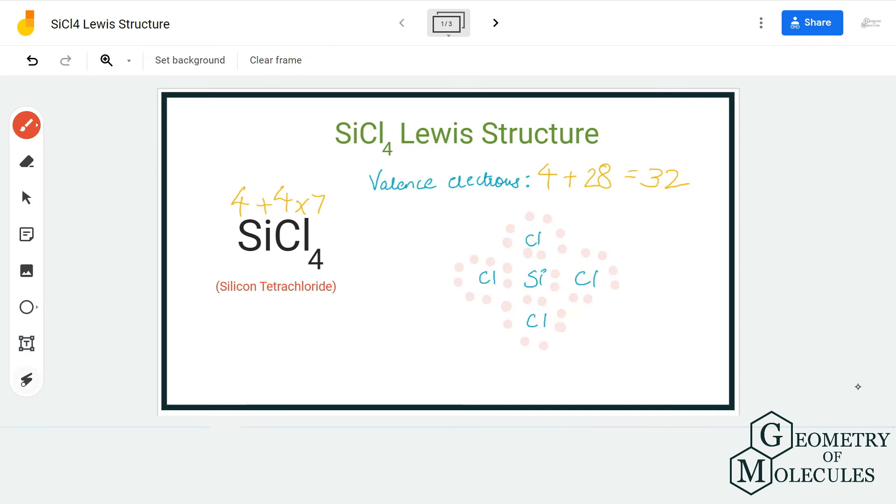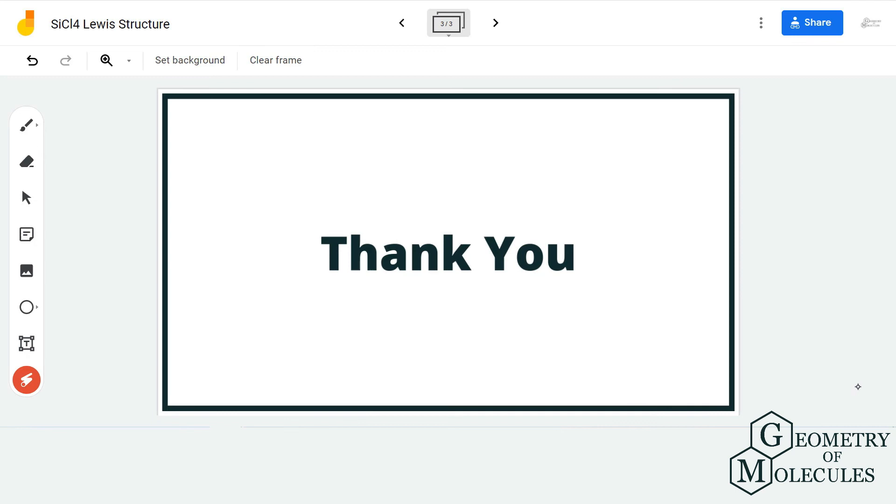If you look at the structure, all the atoms like the silicon and the chlorine atoms have complete octet because each atom has 8 valence electrons and hence this is the Lewis structure of SiCl₄ in which there are four single bonds formed between silicon and chlorine atoms. I hope this video helps you to understand that and for more such videos on Lewis structure, molecular geometry, polarity of the molecules, make sure to subscribe to our channel and thanks for watching.